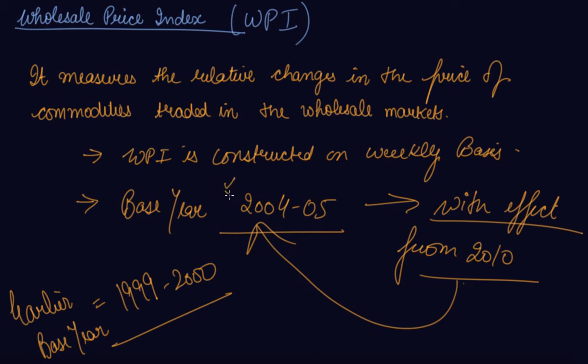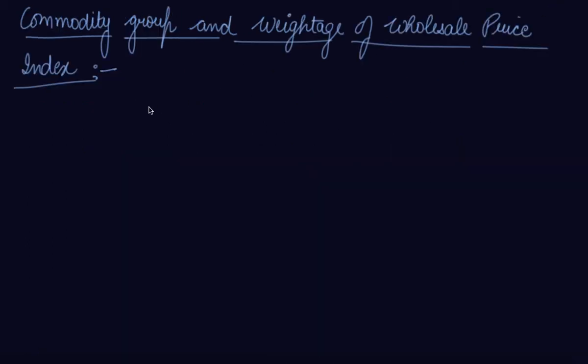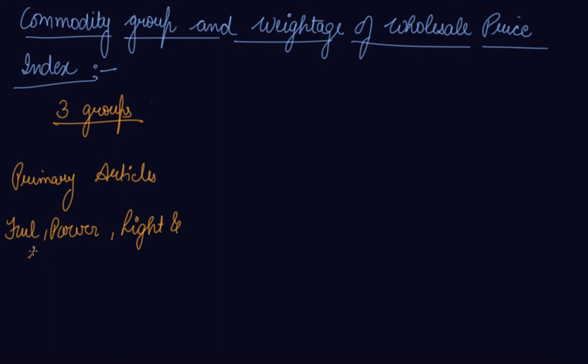Now, the commodity group and weightage of Wholesale Price Index. In India, we have classified all the commodities into three major groups: primary articles, fuel power light and lubricants, and manufacturing.